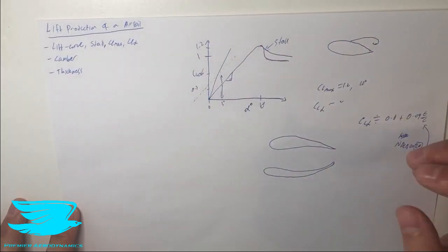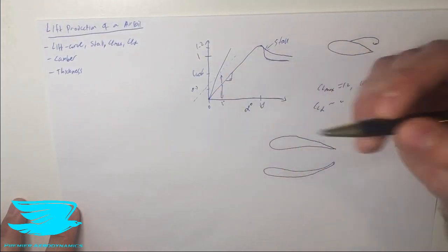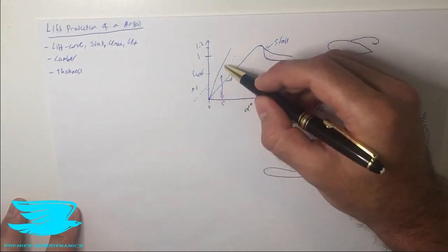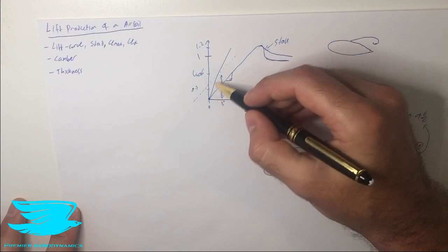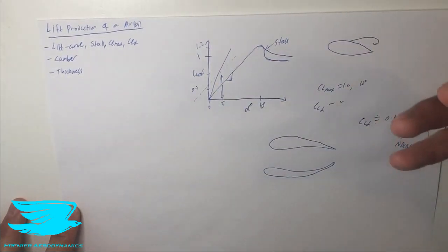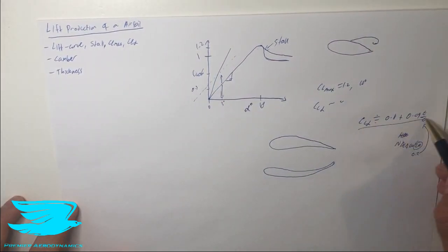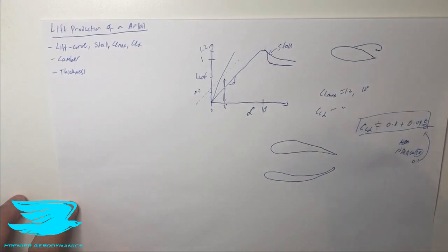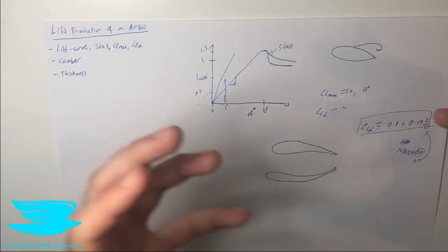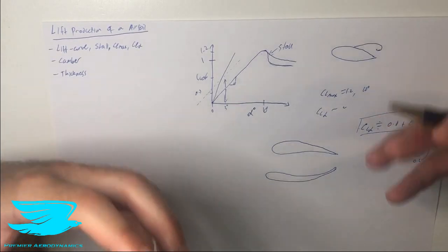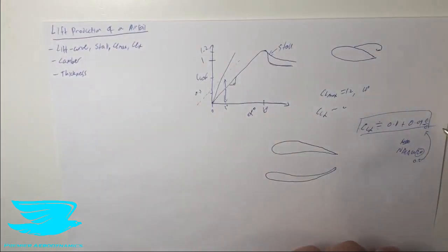In terms of thickness, if we have a thicker airfoil, this changes the CL alpha. So the line here, this linear part gets steeper with increasing thickness. And we have this really nice equation which isn't perfect but it is a good approximation for determining how much lift an airfoil will produce and the CL alpha based on just the thickness to chord ratio. It's a very powerful equation considering how simple it is.